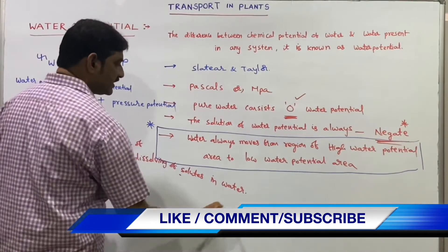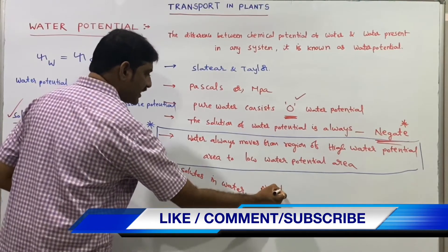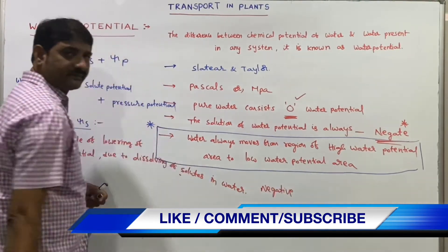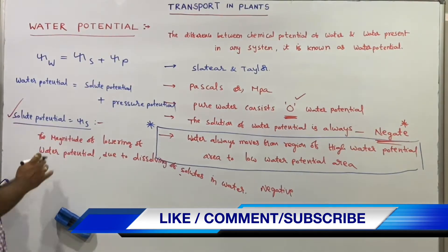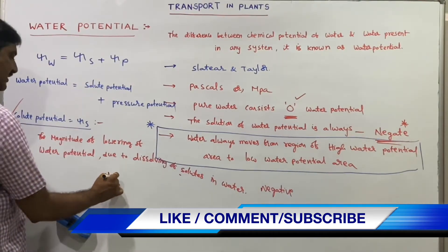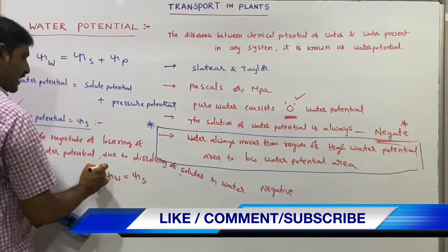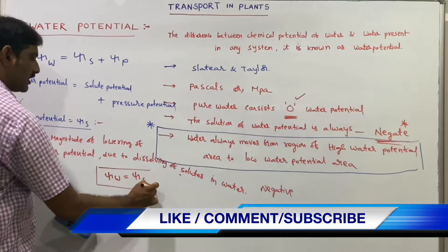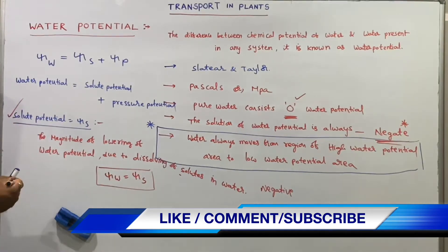At atmospheric pressure, water potential equals solute potential. That is, ψw = ψs at atmospheric pressure.